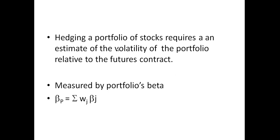When you're hedging the portfolio, we need to estimate the volatility of the portfolio relative to the futures contract. In the previous video on a short-term interest rate hedge, I discussed hedging a commercial paper issue. The commercial paper issue was 180 days and the Eurodollar futures contract was 90 days. It turned out the commercial paper was twice as sensitive to a change in interest rates as the futures contract, so you had to double the number of contracts.